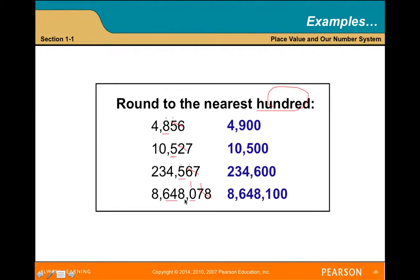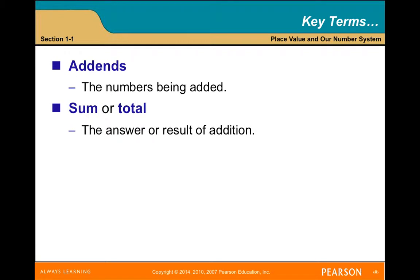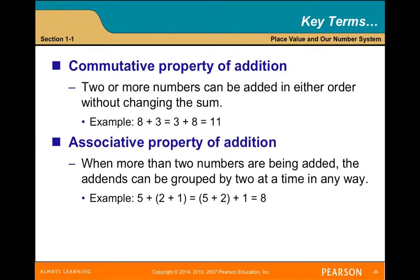Key terms for addition: addends are the numbers being added; the sum or total is the result. The commutative property means two or more numbers can be added in any order without changing the sum — for example, eight dollars plus three dollars equals the same as three dollars plus eight dollars, both equal eleven. This doesn't apply to subtraction or division. For the associative property of addition, addends can be grouped in any way and the sum remains the same.